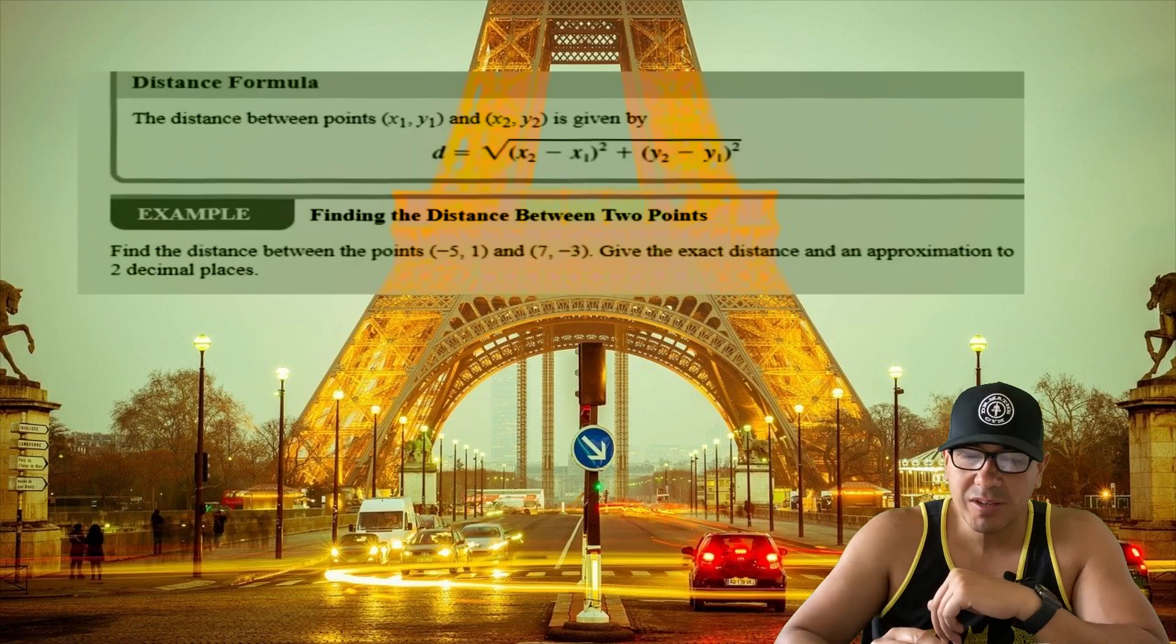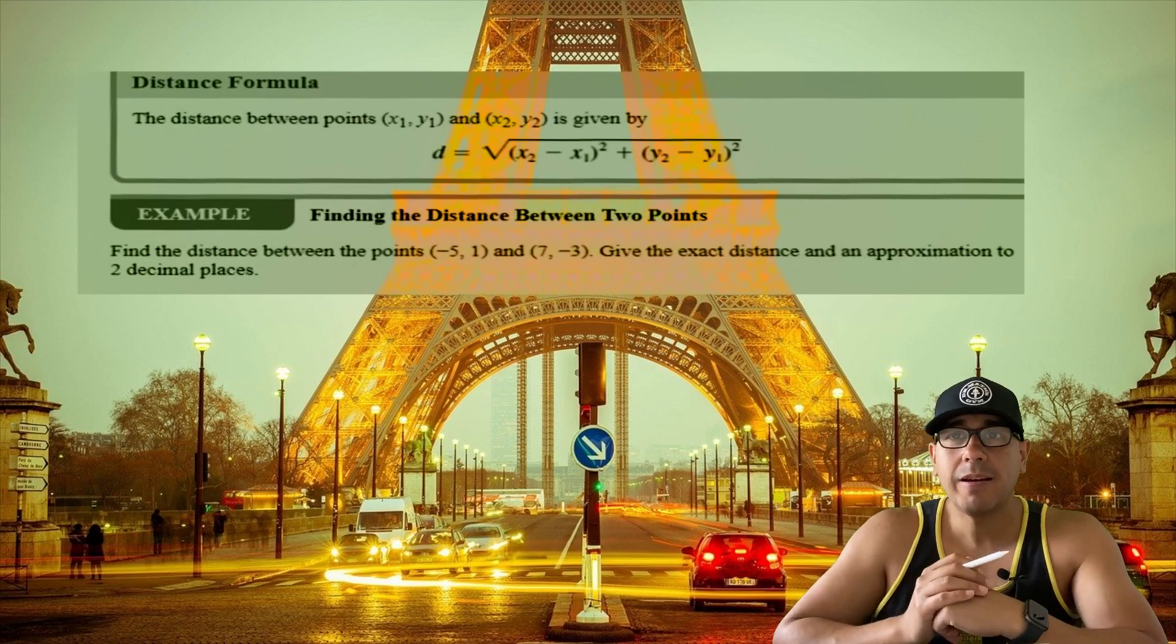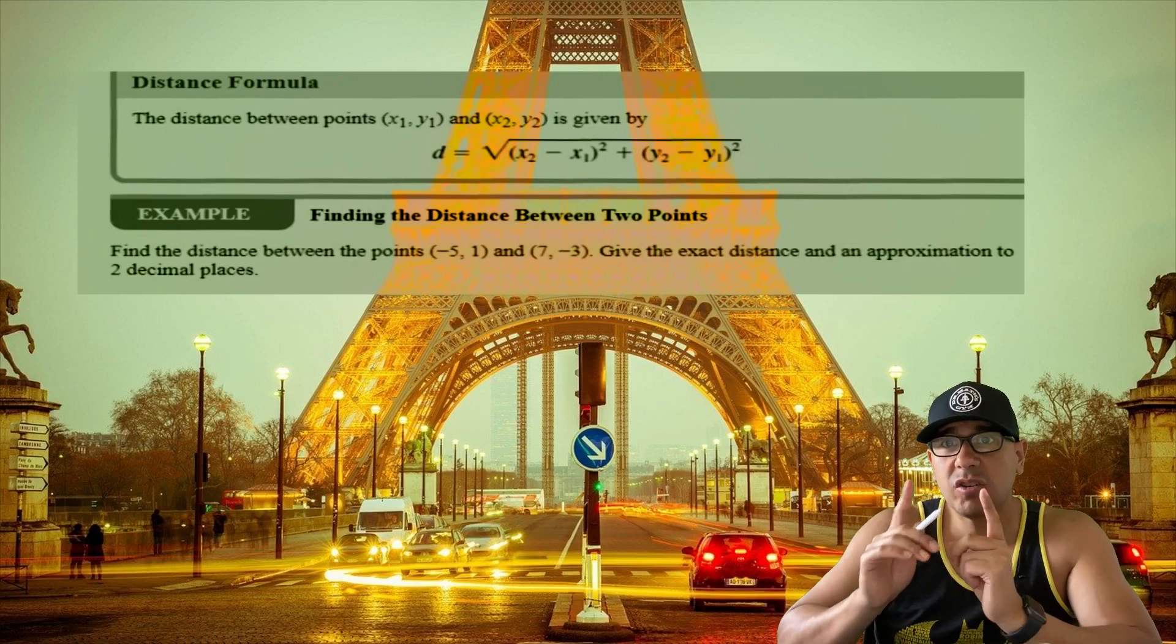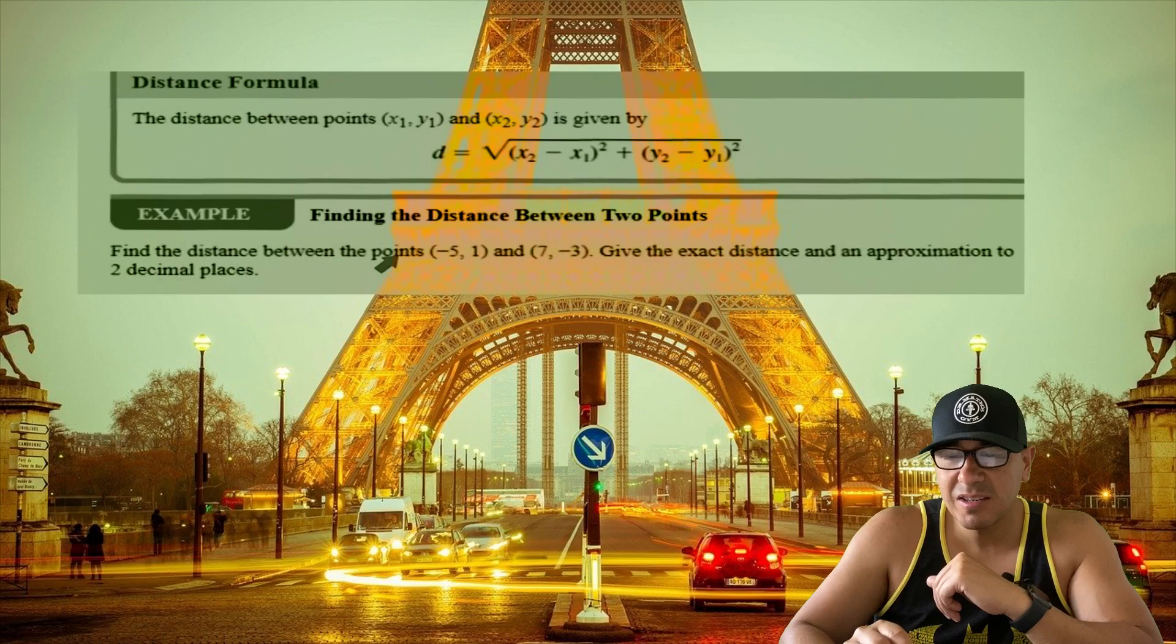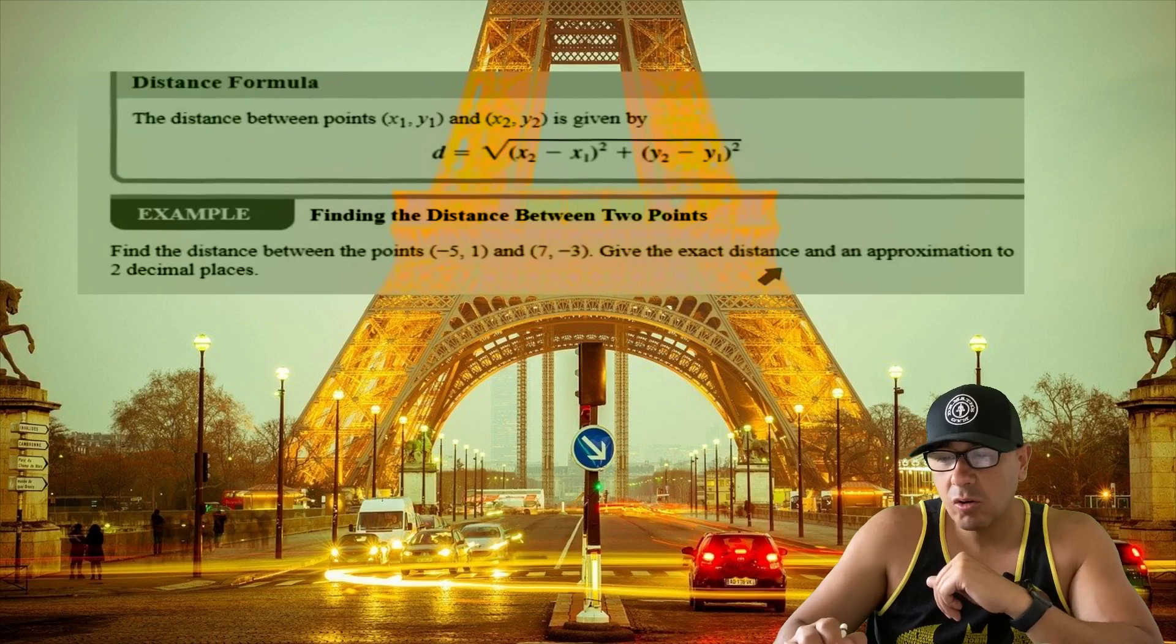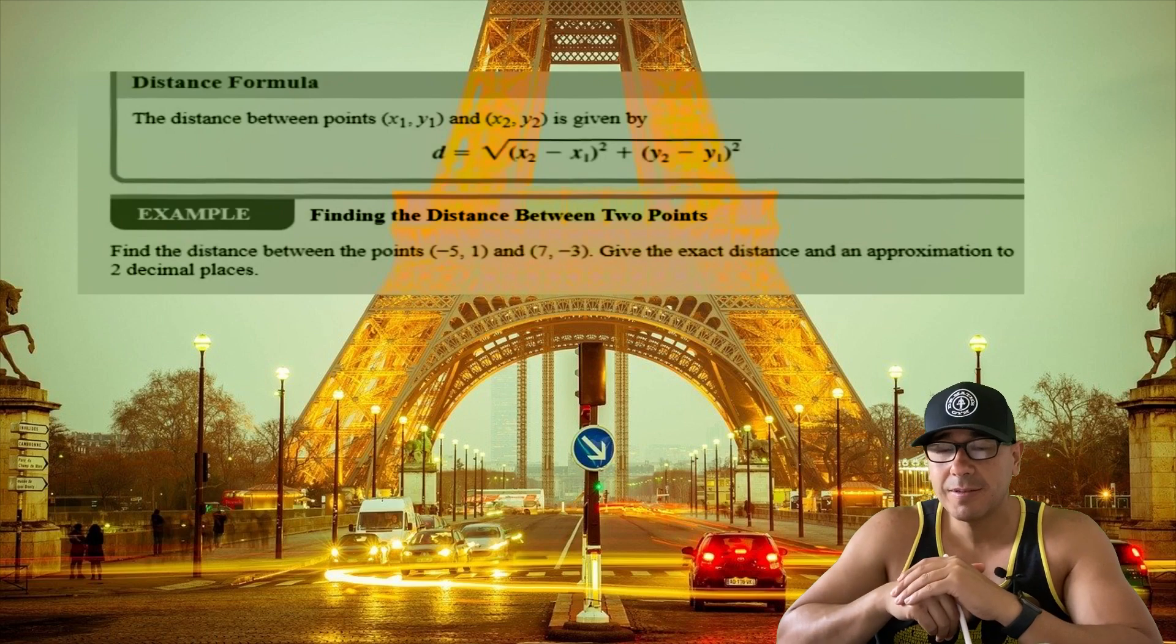Here we go, let's start with our first example. Find the distance between the points (-5, 1) and (7, -3). We're going to look at the exact distance and then approximate this to two decimal places.